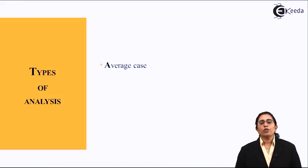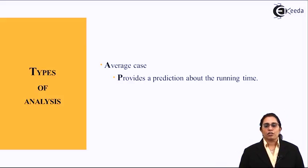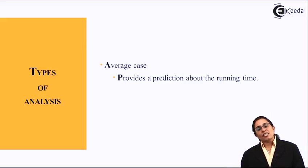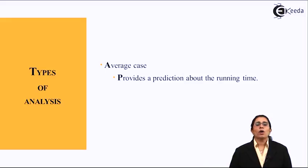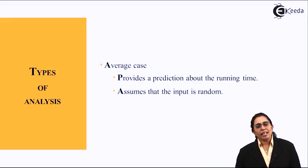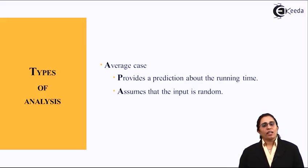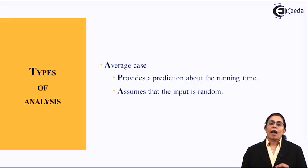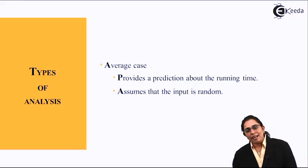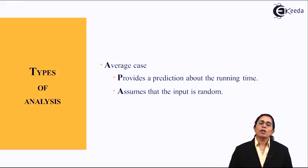The average case complexity provides a prediction about the running time that lies somewhere between the worst case and the best case scenario. It assumes a very random input, and for that random input we get an output. So it lies between the upper bound and the lower bound of algorithm analysis.